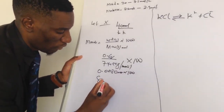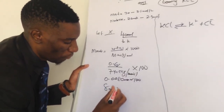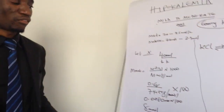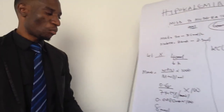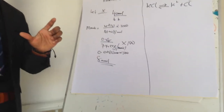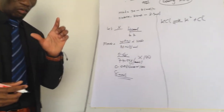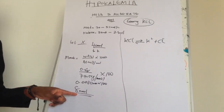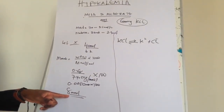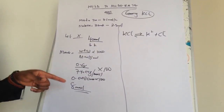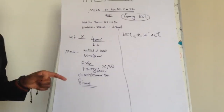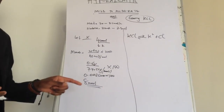This gives us 8 millimoles. So one tablet of potassium chloride 600 mg contains 8 millimoles of potassium chloride. But since we are correcting the potassium level, we need to know the millimoles of potassium itself, not the whole salt.